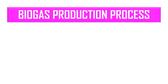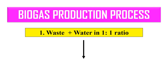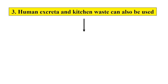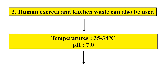The process of biogas production involves the following steps. First, dust particle levels are reduced by about 10% by mixing water with waste in a 1:1 ratio. Spent slurry at about 2% of fresh dung slurry is added back to maintain the microbial population. Calcium ammonium nitrate is also added to the slurry. The optimum temperature should be between 35 to 38°C, as lower temperatures yield less gas.